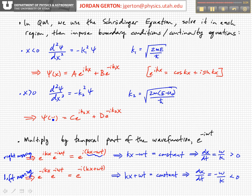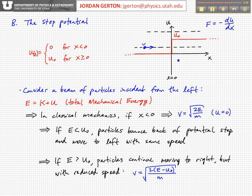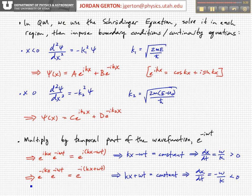And so from this, we can see that in the region where x is greater than zero, that is where the potential has a value u0, and if we're considering solutions where the initial beam of particles are coming from the left, from left to right, then we can basically set d equal to zero.